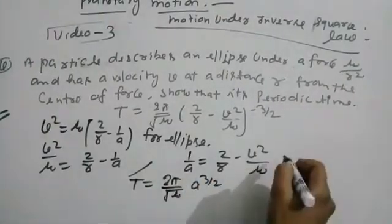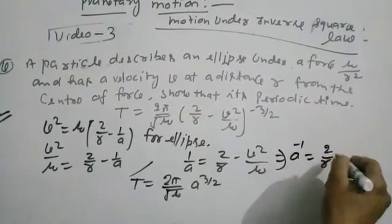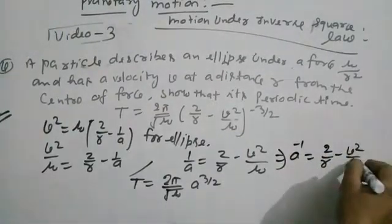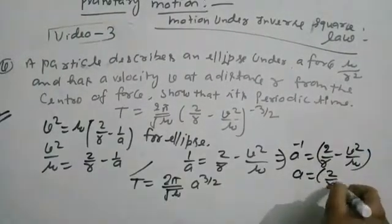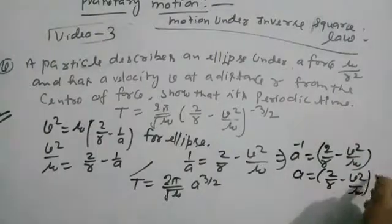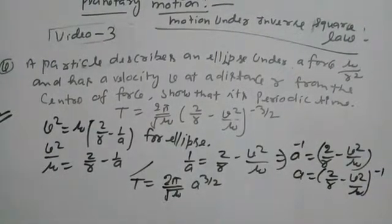Now, 1/a = 2/r - v²/μ, so a = (2/r - v²/μ)^(-1). Substituting this value...